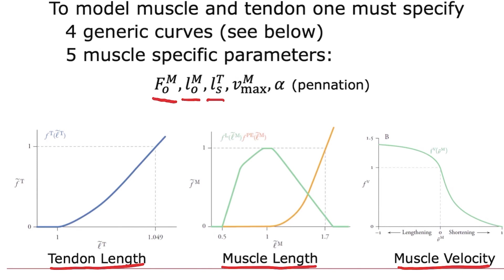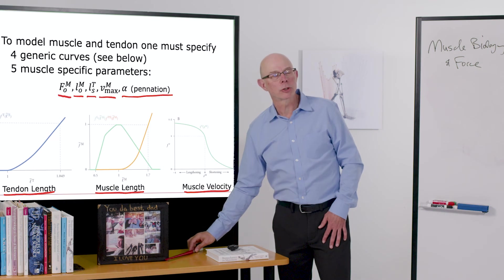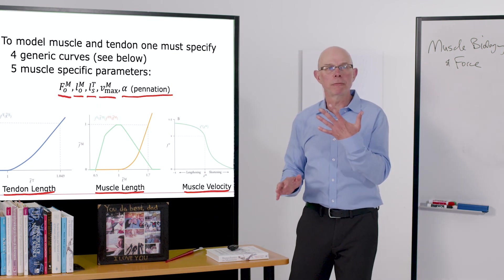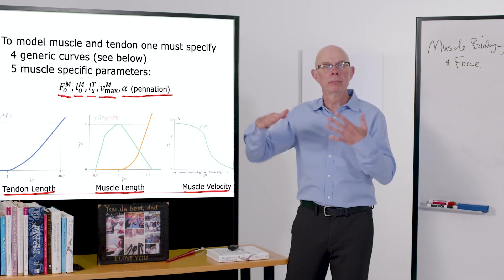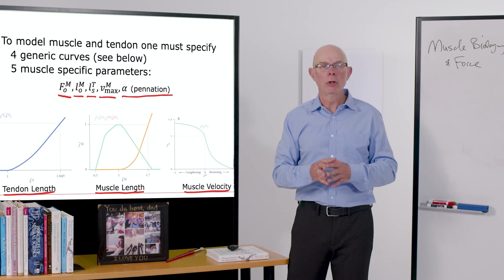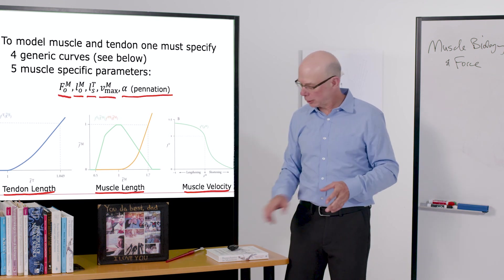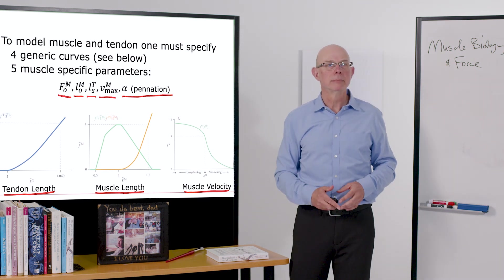The v_max, the maximum contraction velocity here, and the pennation angle. We'll talk more about that in the next lecture, but that's the angle that the muscle fibers make with the tendon. Really powerful model. We'll get into the details in the next lecture. See you there.